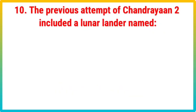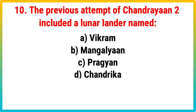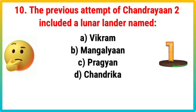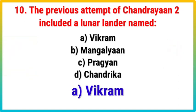Question 10. The previous attempt of Chandrayaan included a lunar lander named: Your options: A. Vikram, B. Mangaliyan, C. Raghiyan, D. Chandrika. Correct answer is A. Vikram.